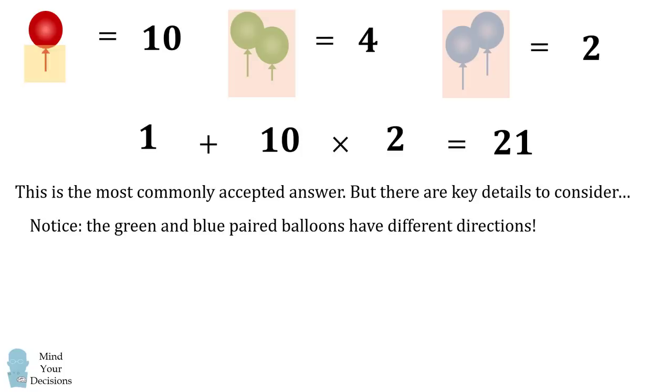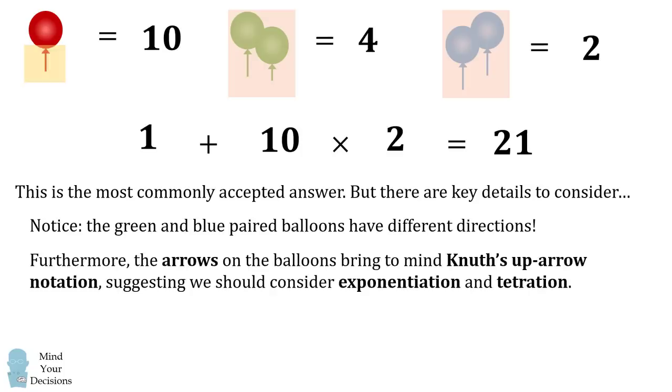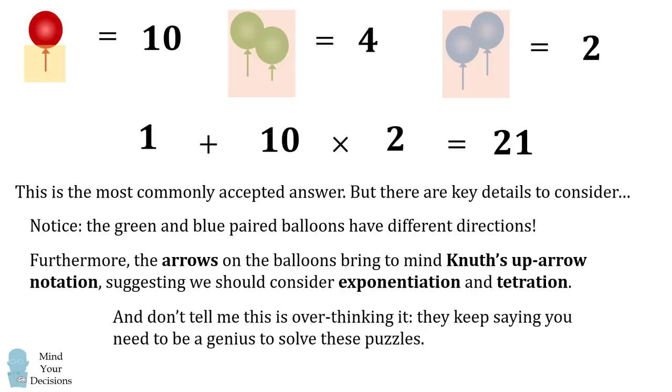Also, for all of the balloons, the arrows on the balloons are used for the strings. So these arrows bring to mind Knuth's up arrow notation, which suggests that we should be considering exponentiation and tetration. And before I explain how that changes the answer, I want to say don't tell me that this is overthinking the puzzle. They keep saying that you need to be a genius to solve these puzzles. So I don't think it's beyond the realm of these puzzles to use higher level mathematics.